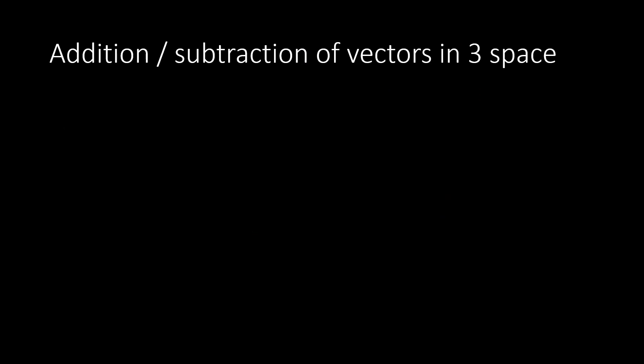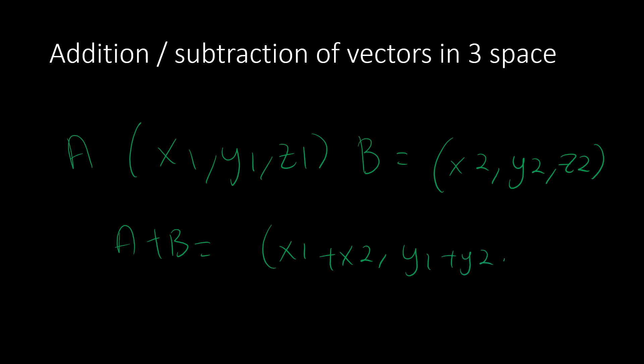Now moving on to addition and subtraction of vectors in 3-space. Just like we did in 2-space, we do the same thing, except the z component gets added. For example, given vector (x1, y1, z1) and vector (x2, y2, z2), a plus b equals (x1 plus x2, y1 plus y2, z1 plus z2).